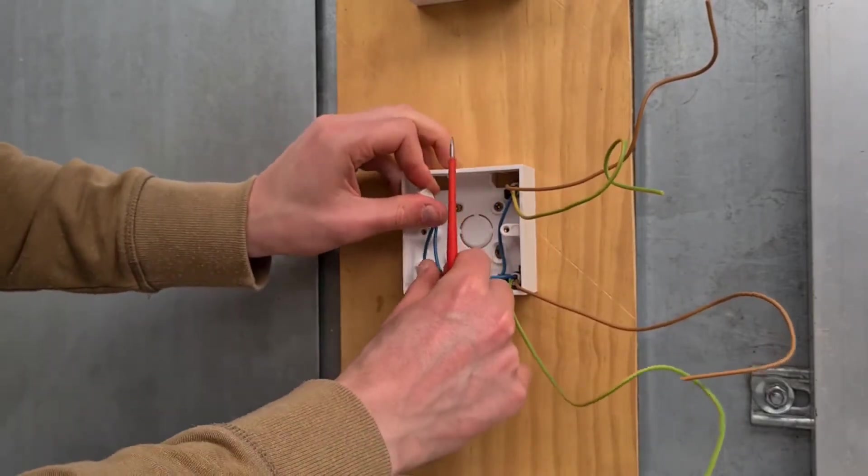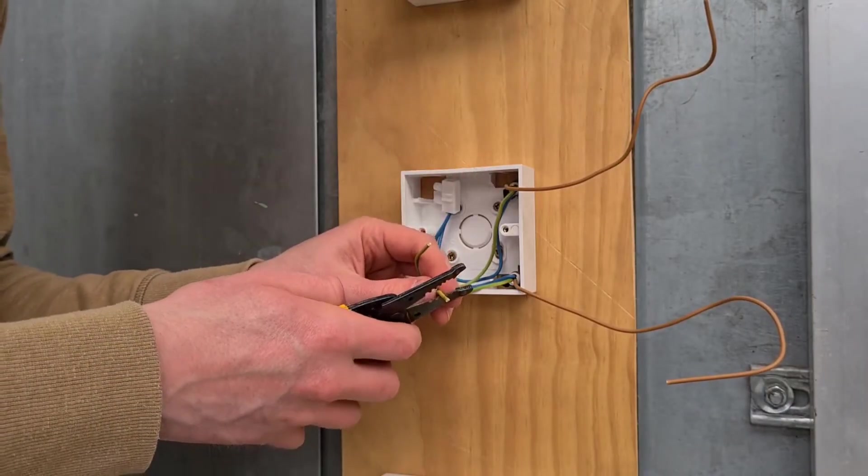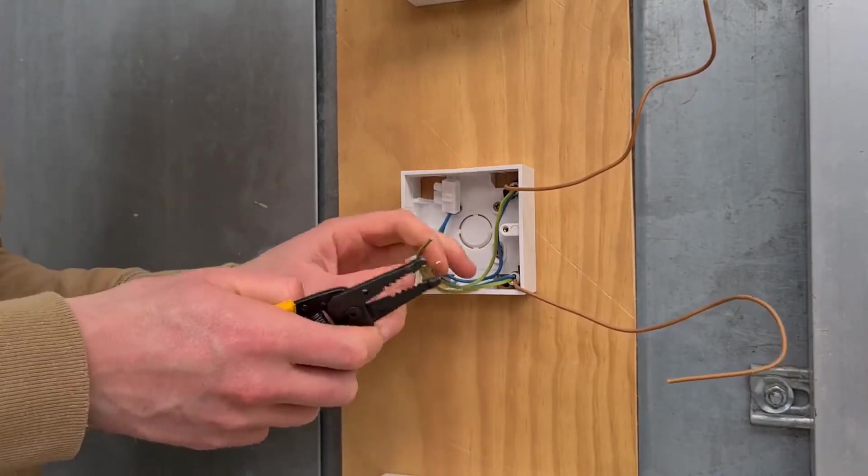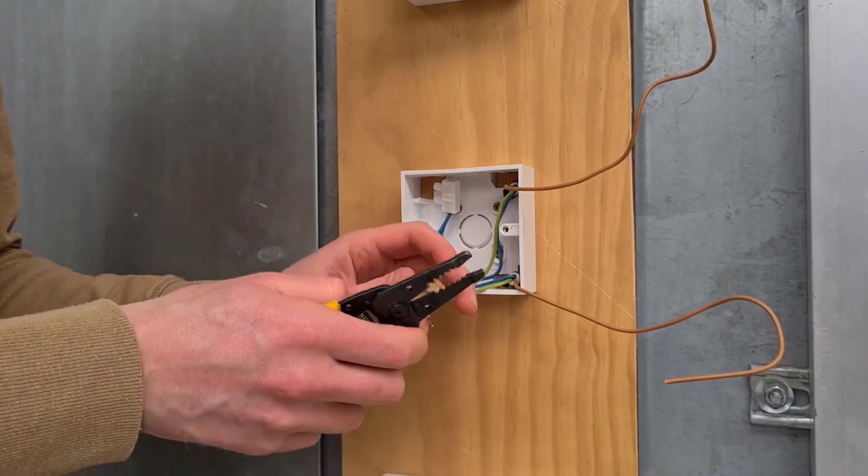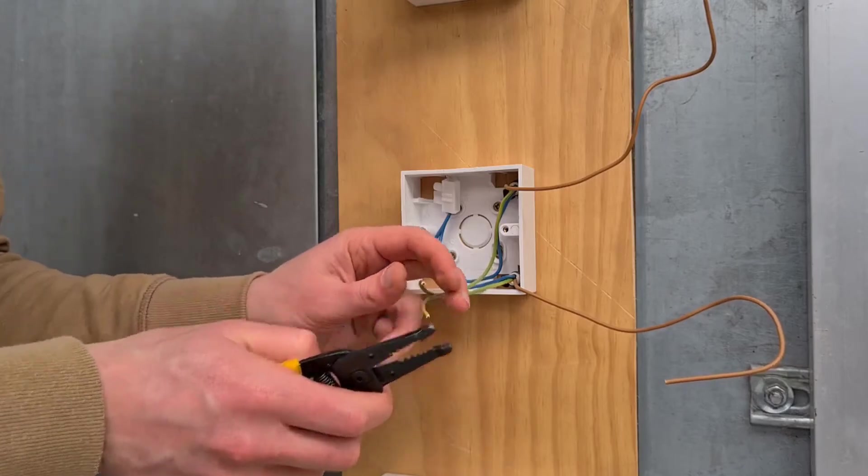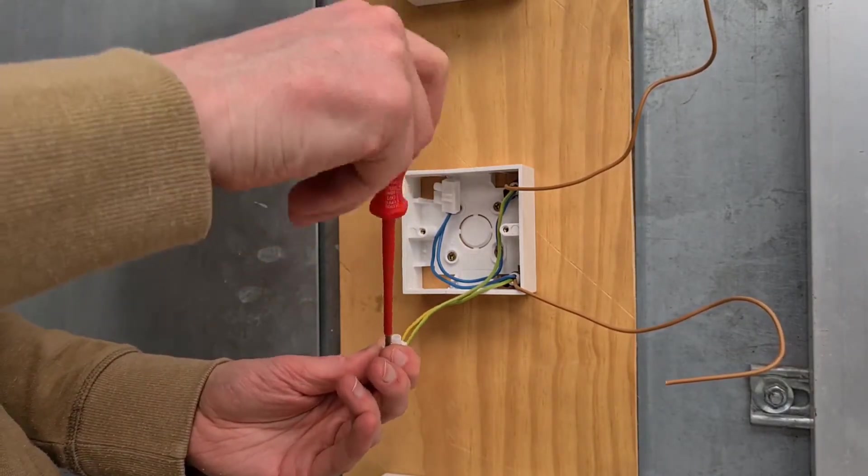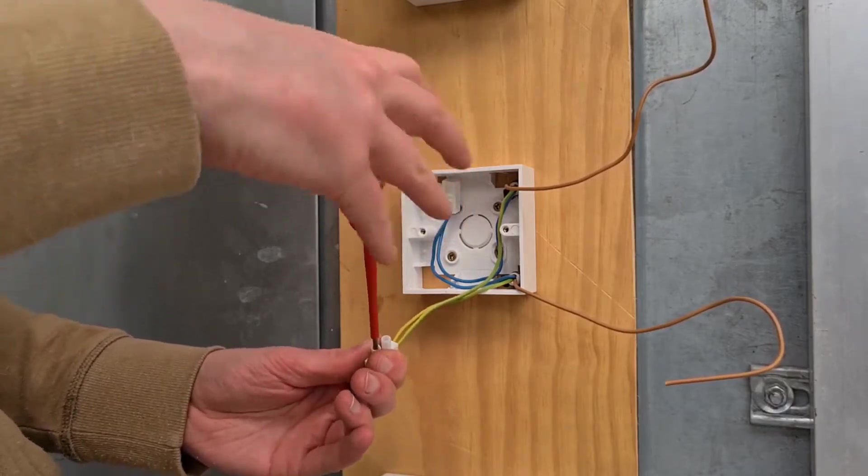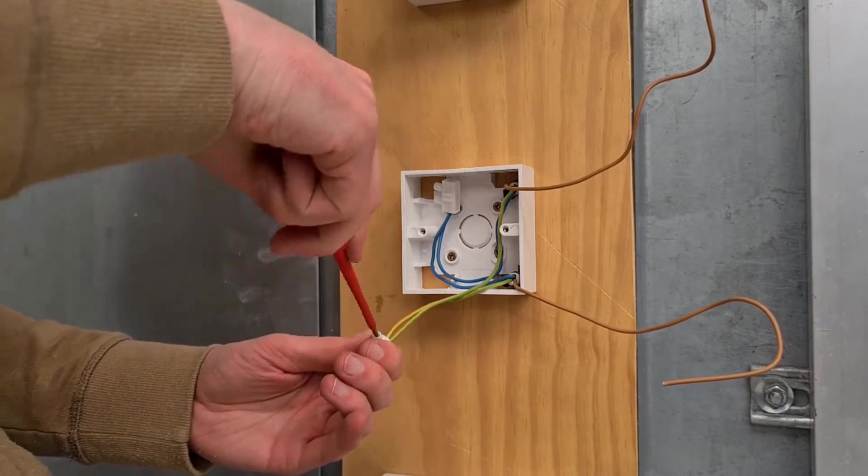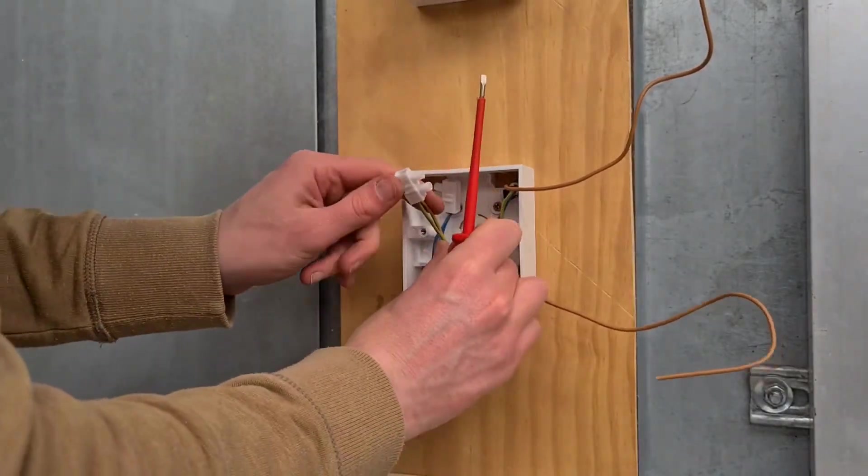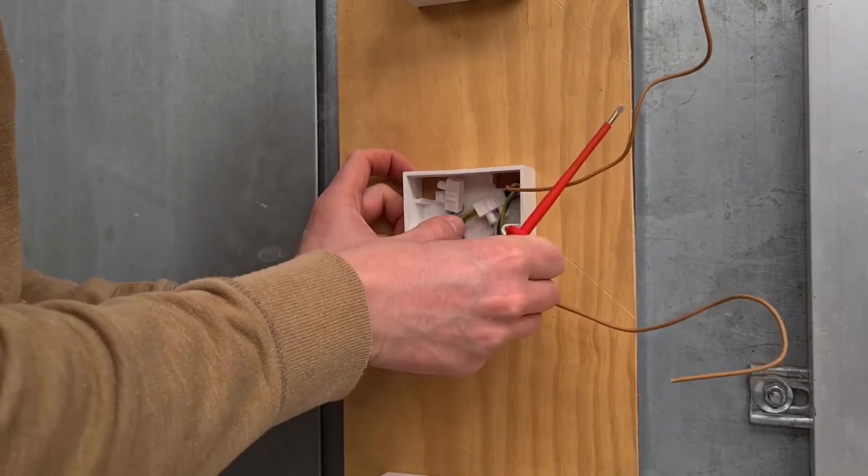To complete the lighting circuit, the neutral and earth cores are wired to strip connectors. Blue cores are the neutrals, and green and yellow cores are earths. Use a wire stripper to remove 20 millimeters from the outer sheathing of each cable core. Both neutrals and earths go to two separate strip connectors. Tighten terminal screws and verify the insulation of each core is clear from the screw terminal. Pull individual cores to check the connections are secure.